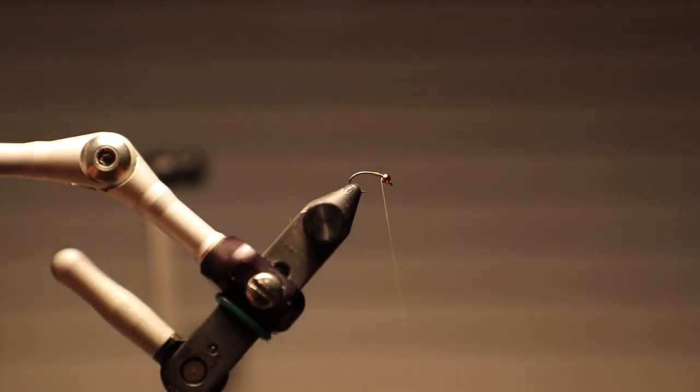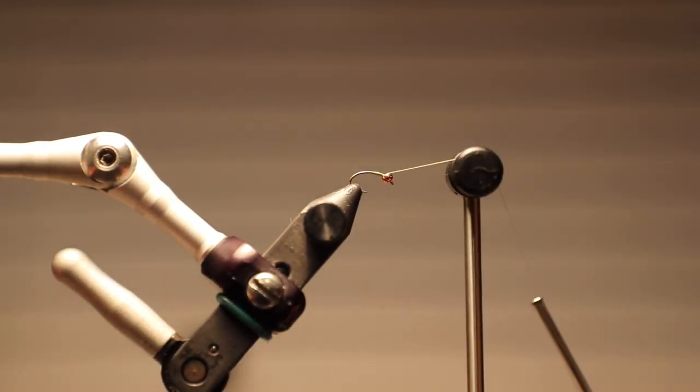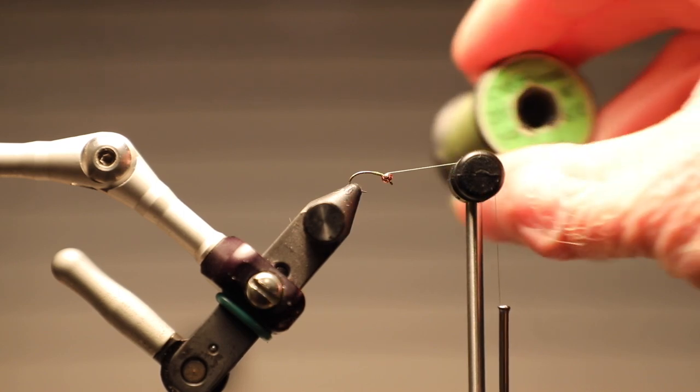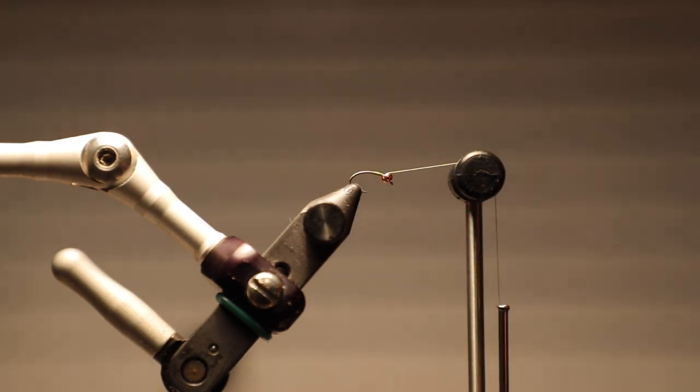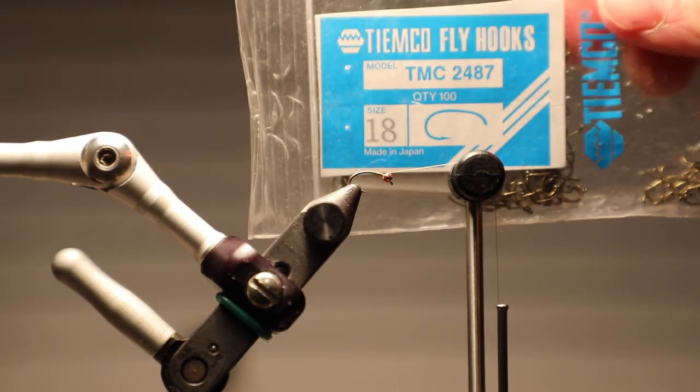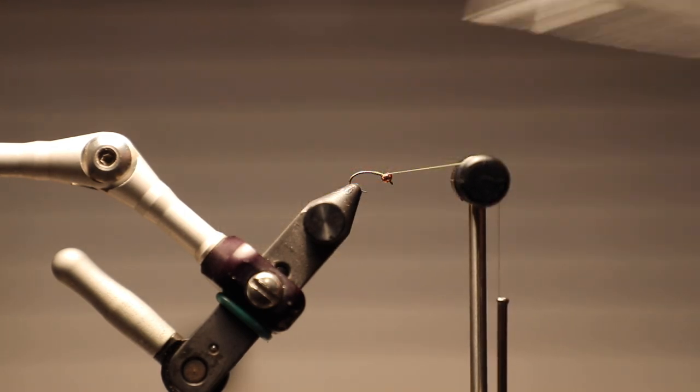I just started my thread right there behind the bead and secured it. I'm using basic Uni-Thread. You can use Veevus. I also use a lot of Veevus thread, especially in the small sizes for tying midges. I'm tying this one a little bit bigger just so it shows up good in the video. This is a size 16, but typically I'm going to tie this fly in an 18 or even a little bit smaller.